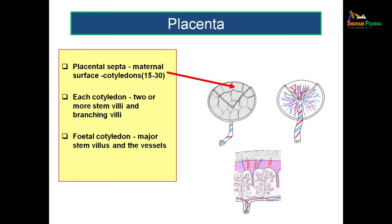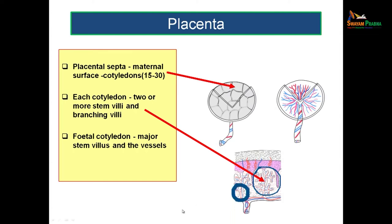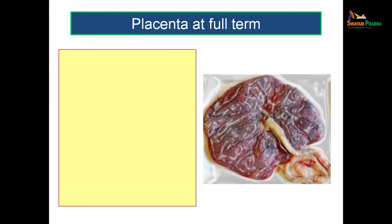Each stem villus with the fetal capillaries is called a fetal cotyledon. The cotyledons are formed due to the formation of the placental septa. Each maternal cotyledon has two or more stem villi with associated branching villi. The fetal cotyledon is one stem villus with the fetal capillaries in it, appreciated from the fetal surface. The two terms to remember are maternal cotyledon and fetal cotyledon.